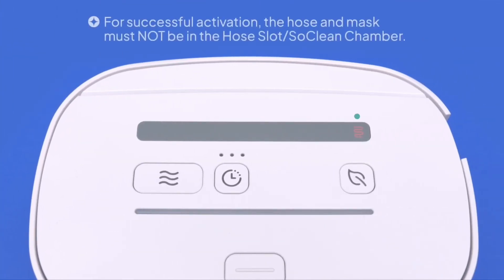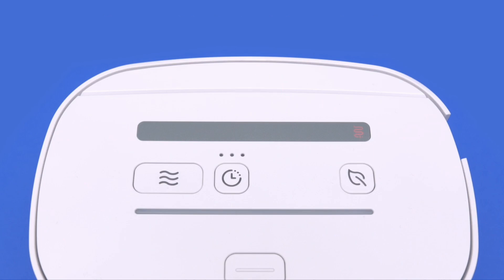If this is your first time using your SoClean 3, the final step is to activate it. Press the control panel buttons in the following order.